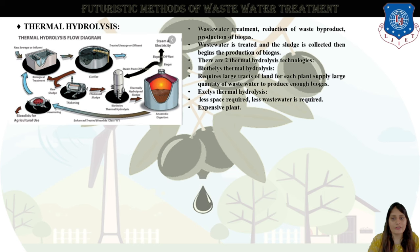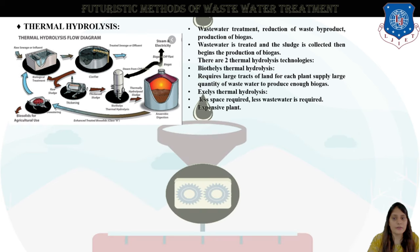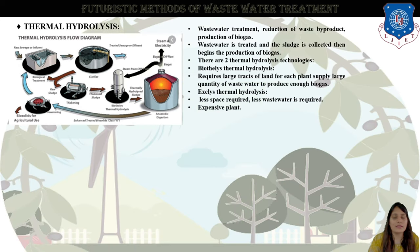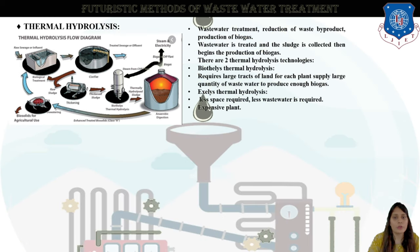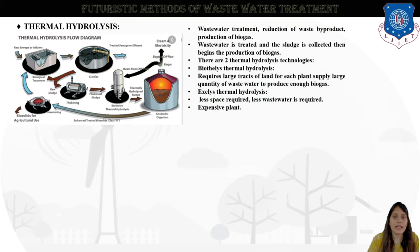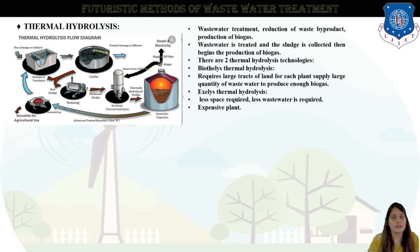Looking at the thermal hydrolysis diagram: raw sewage or effluent is collected, it goes to the clarifier, and you can see biosolids for agricultural use via dewatering. Biothelys thermal hydrolysis is used for one approach and Exelys requires a larger plant size with more space requirement but is the more expensive plant, while Biothelys is less expensive. Both are helpful to produce biogas. With thermal hydrolysis of wastewater we can generate biogas, which is very helpful for steam and electricity generation.